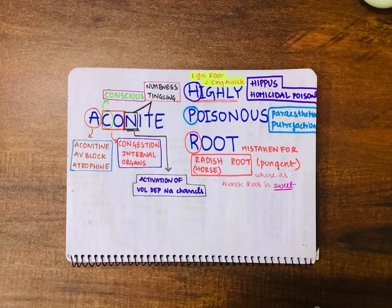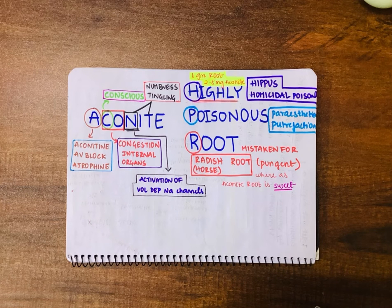AV block can be seen among the cardiac symptoms, which include tachycardia, AV block, and bradycardia. For this AV block, we give atropine. So A stands for aconitin, AV block, and atropine.